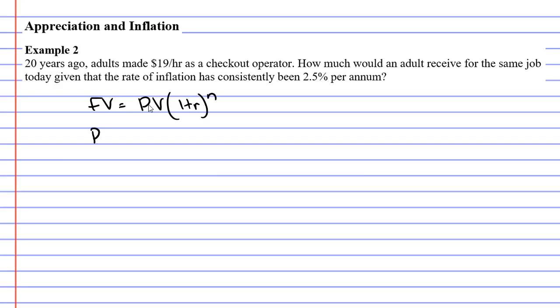PV stands for the present value, which is the original value of $19. The interest rate in this case is 2.5%, which we need to divide by 100, giving us 0.025. N stands for the number of time periods, which in this case is 20 years.